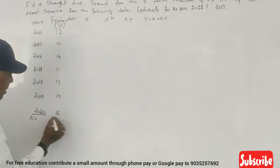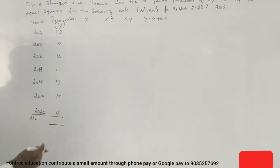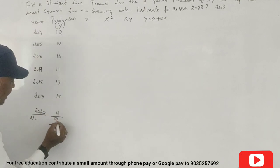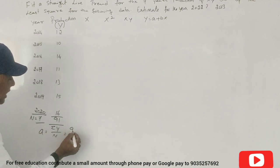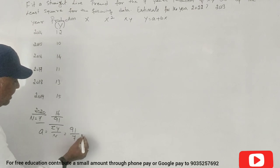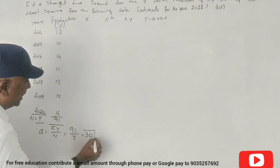So that is easier. The A value is equal to summation Y divided by n, 91 divided by 7, equals 13. Correct?